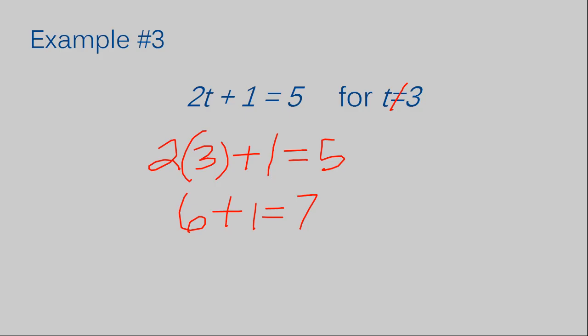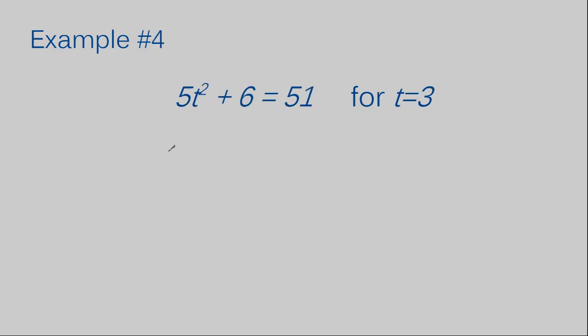Let's move on to our final example, example number 4. Example number 4 has 5t squared plus 6 equals 51. Let's rewrite again. I've rewritten it with my t written as its actual value of 3.